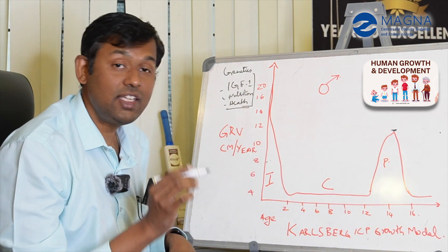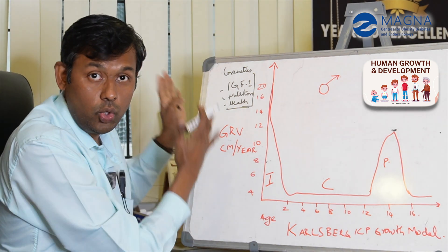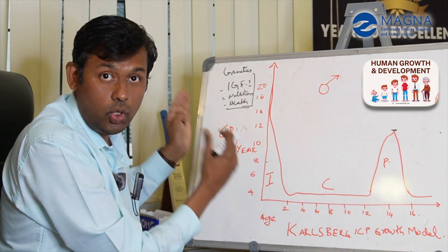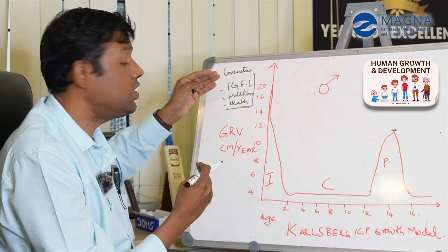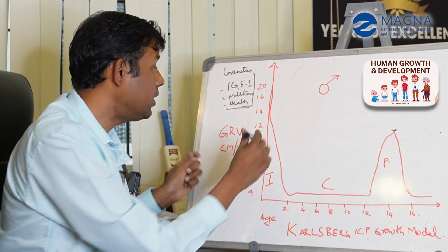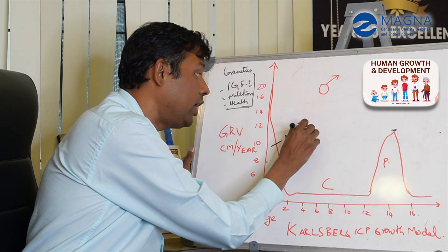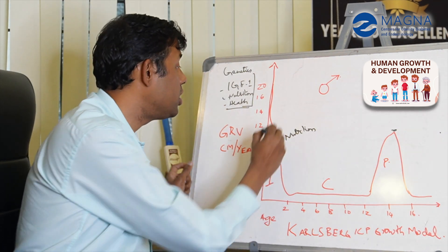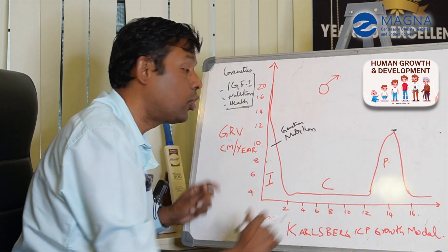What is the hormonal control of these phases of growth? As you understood, in the uterus, what is important is the genetics, IGF-1, maternal nutrition, and maternal health. After the child is born in the first year, nutrition still plays a major role. If the child does not get proper food, it will not grow.